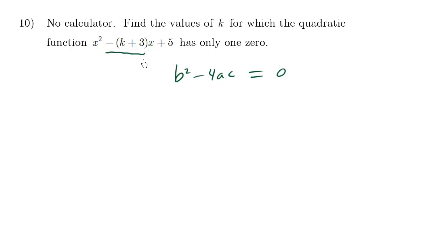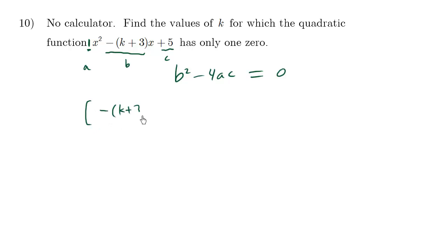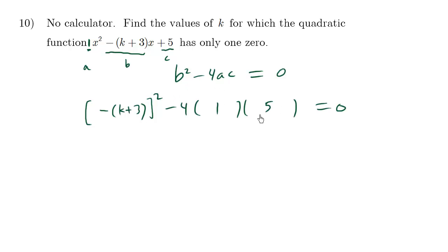This here is our b value. The value of 1 is our a value and our c value is positive 5. So b squared — we have negative k plus 3, squared — minus 4. A happens to be 1; there's no number there, it's assumed to be 1. And c is positive 5. This equals zero.